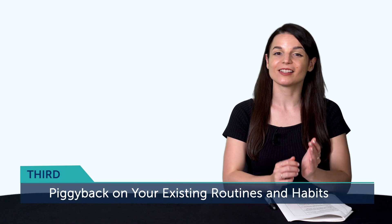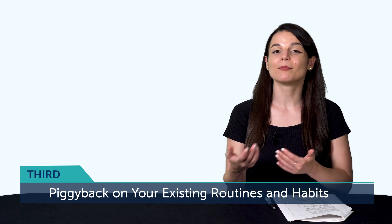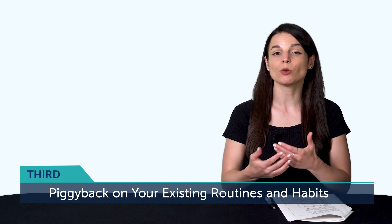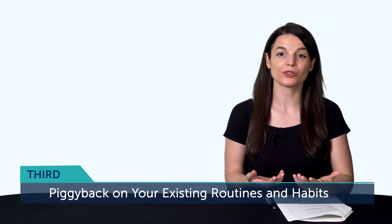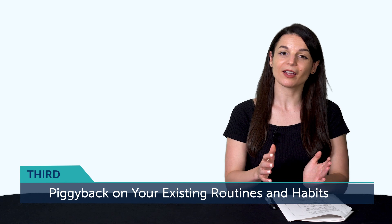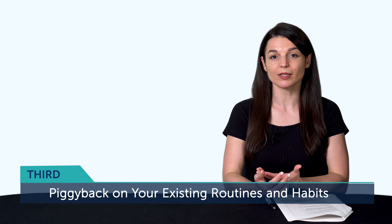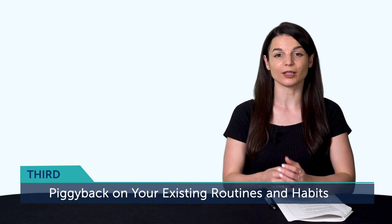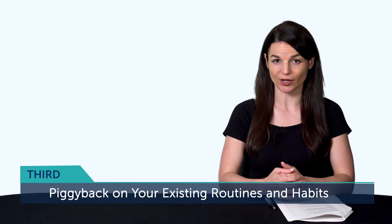Third, piggyback on your existing routines and habits. In other words, combine language learning with the routine that you already do, like commuting to work, doing chores, or taking a walk. That way, your brain automatically starts associating your commute time as language time, and you can easily do a lesson without having to push and motivate yourself. So map out your daily schedule from morning to night and make it detailed. 8am, wake up. 8:30am, breakfast. Commute at 9am. Arrive at work at 9:30am. Lunch at 1pm, and so on. Then look where you can multitask and stick language learning in.